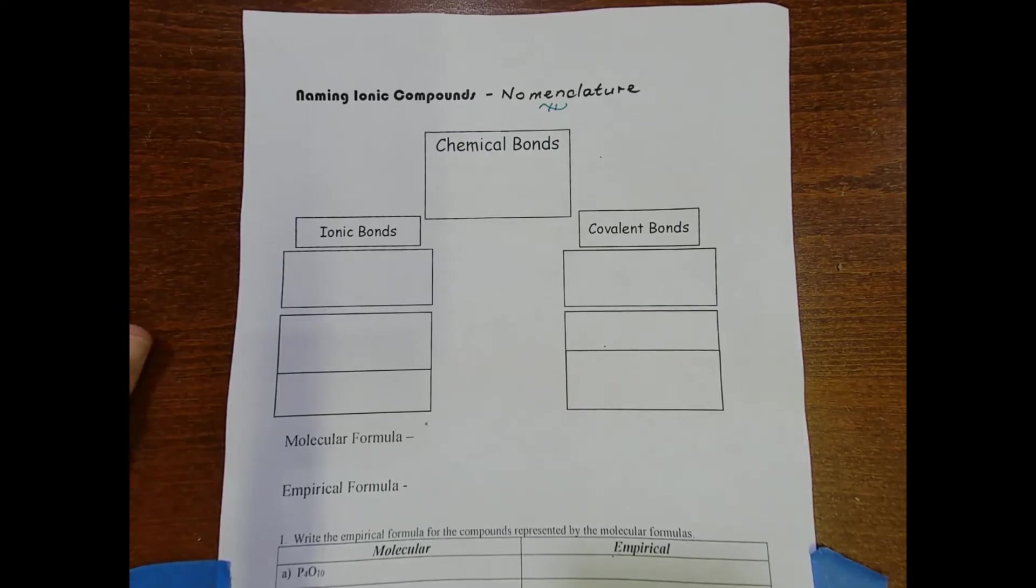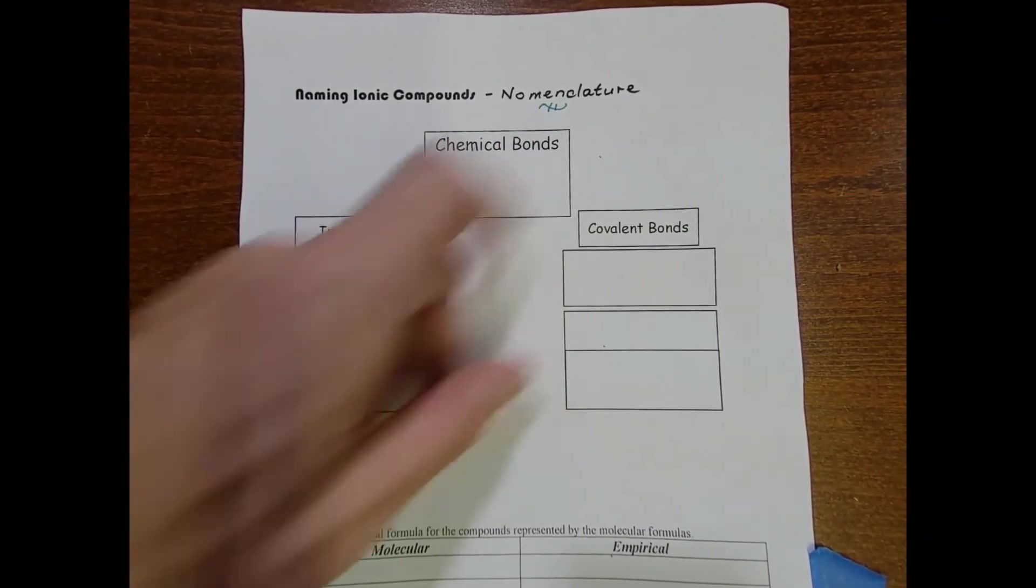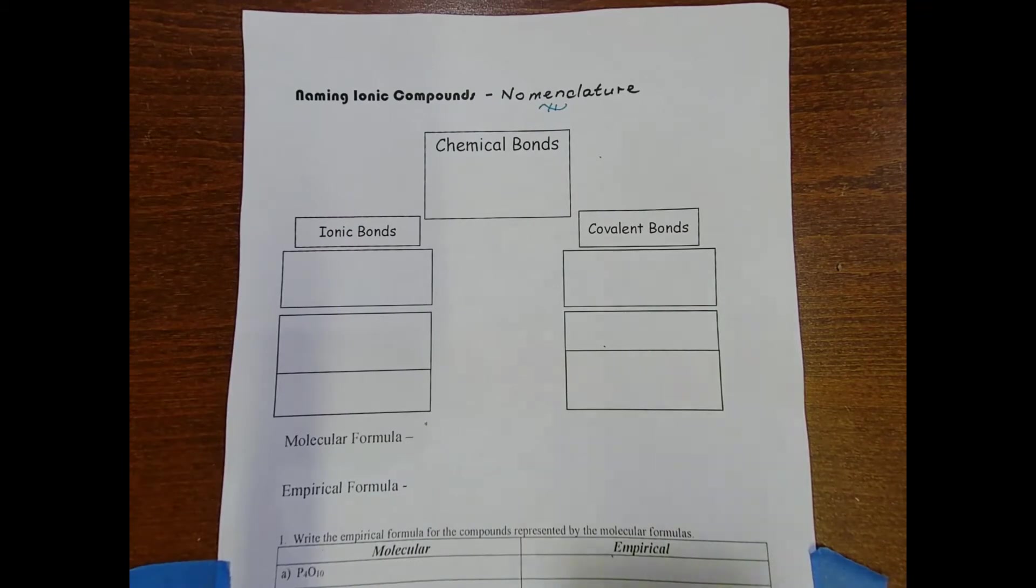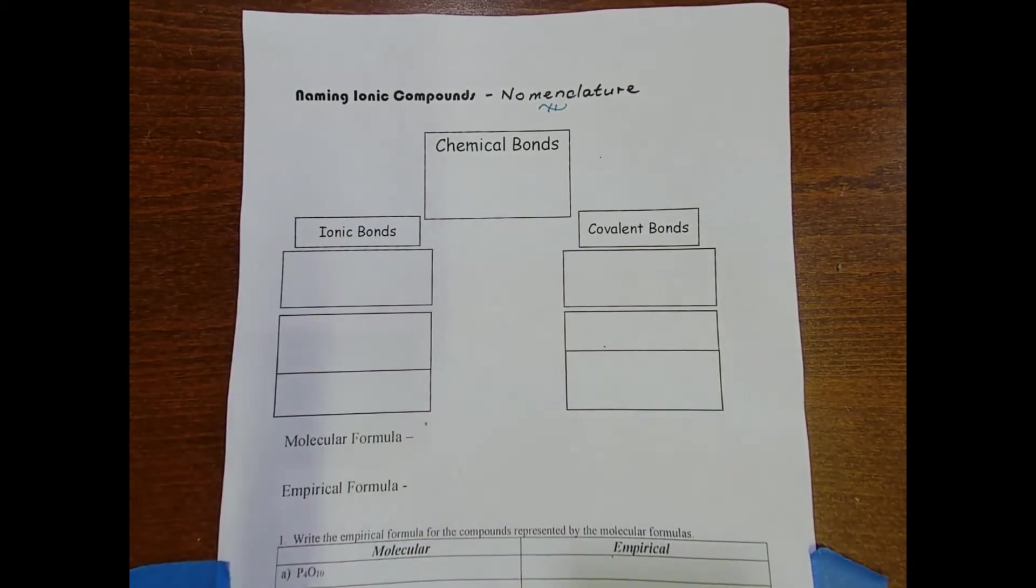We're at the point in the course when we need to start talking about how to name compounds and molecules. This practice is known as nomenclature. First off, in order to be successful at nomenclature we need to be able to classify what we're looking at. Chemical bonds - that term covers a lot of ground.